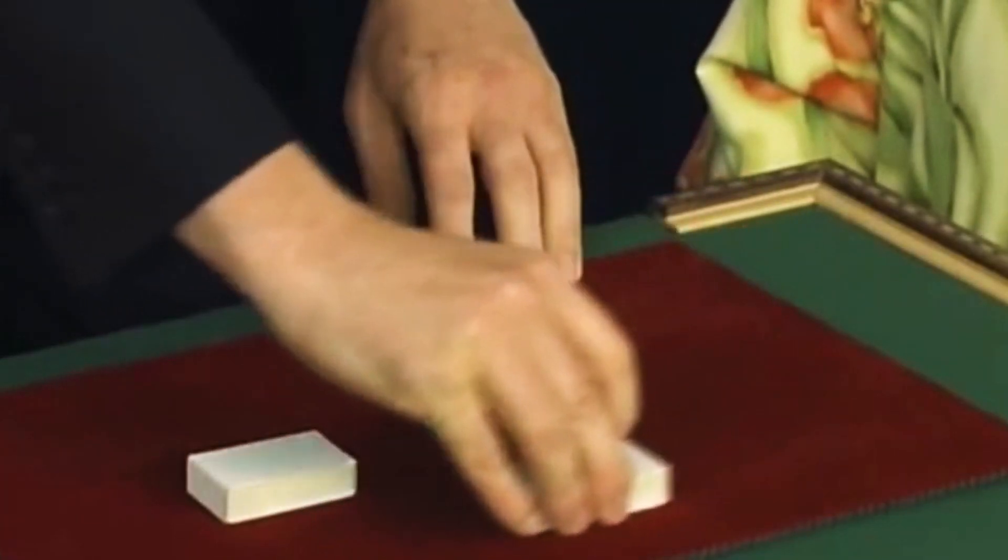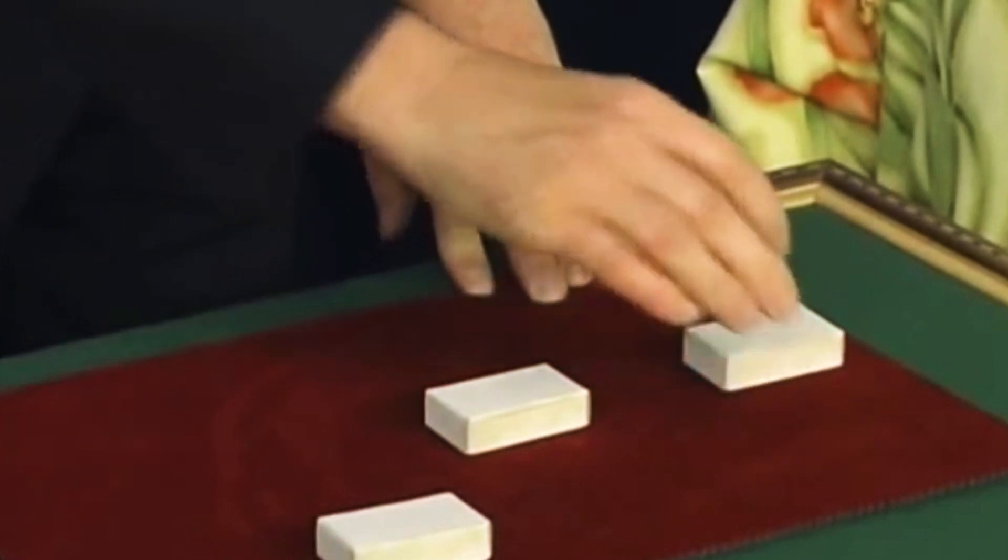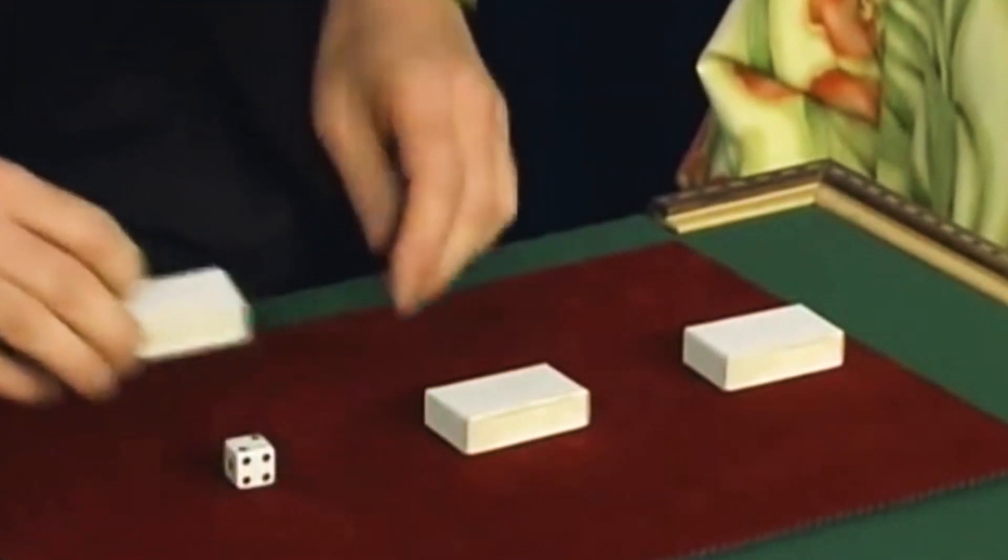Well, a mix-up in slow motion might look a bit like this. Just a simple exchange of two of the boxes. I've done it at this speed. It's pretty obvious where the white die is. It's over here. Yes, of course.